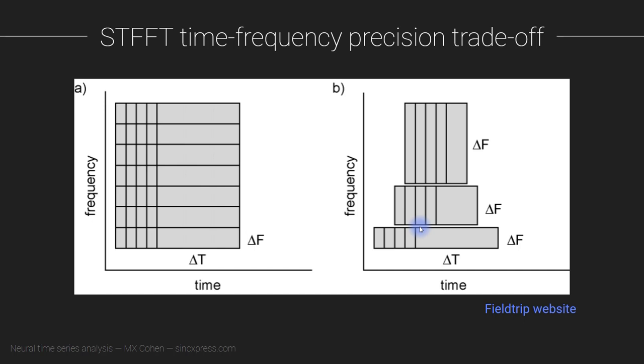And then there's also the option to change the size of the time windows with different frequencies. This is the way of balancing the time-frequency trade-off with short-time Fourier transform.